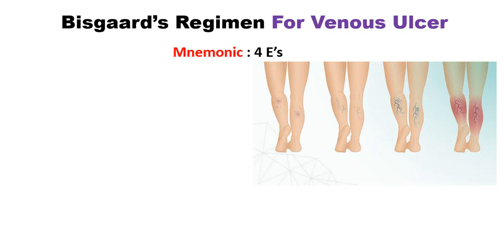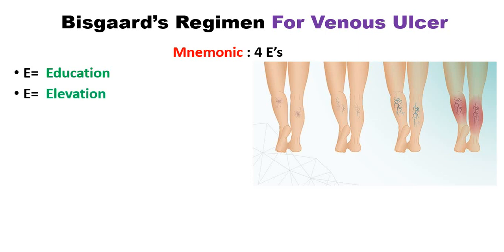The first E is Education — first of all we will give the patient education about this type of ulcer. The next E is Elevation of the leg, which is the second part of the PISCARD regime.